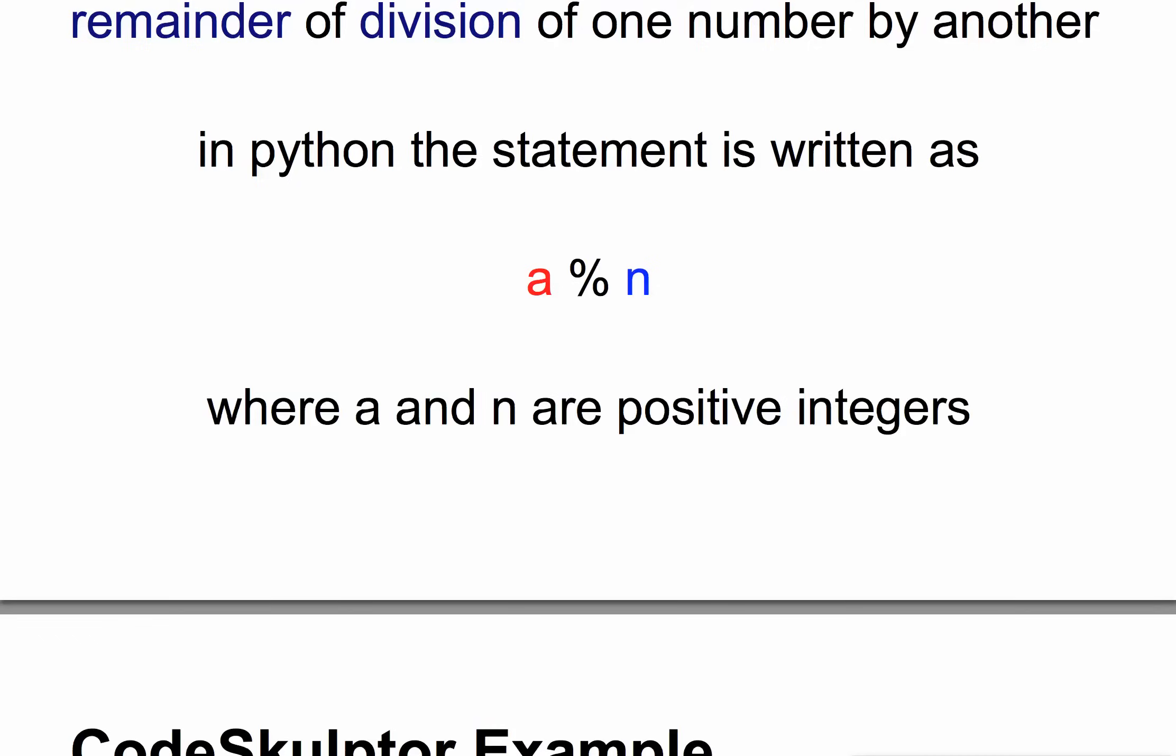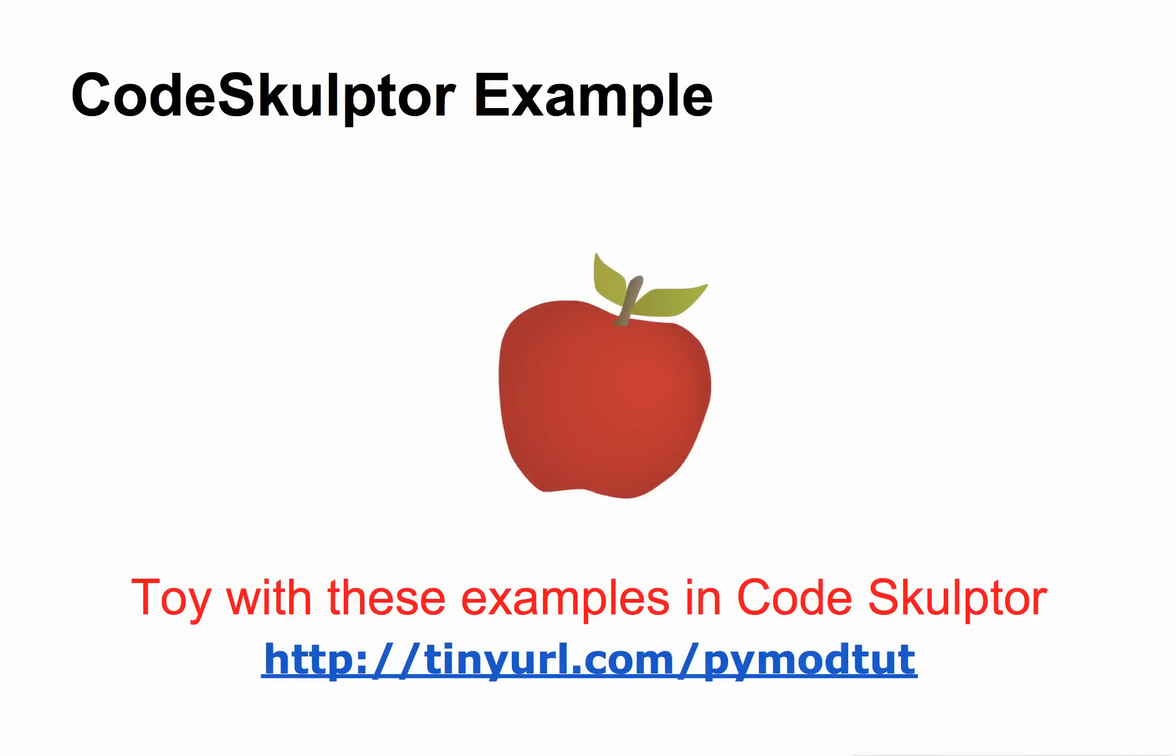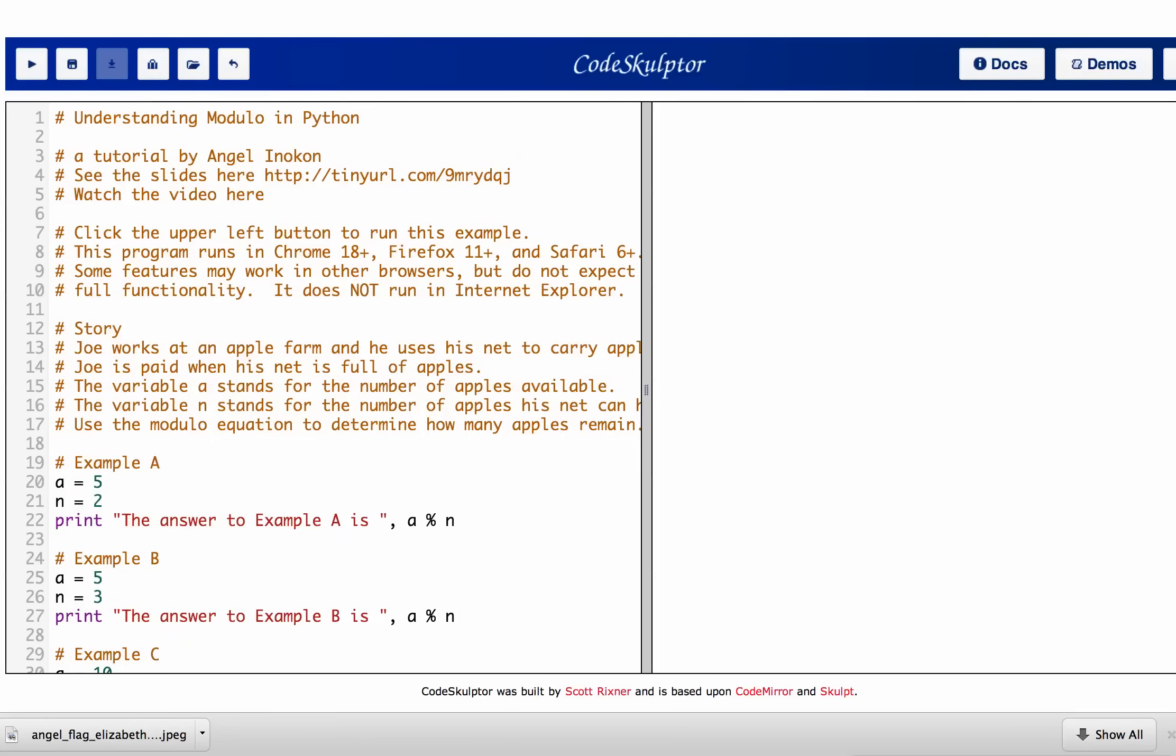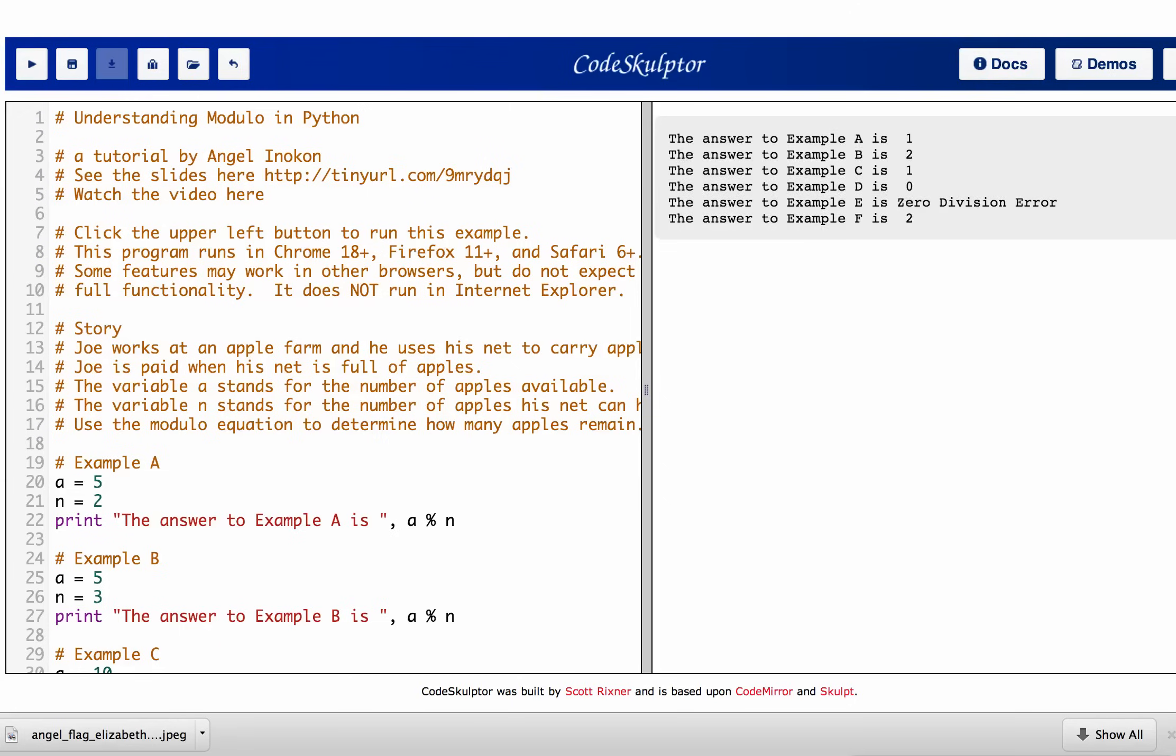And so what I did with this is I threw together some examples in CodeSculptor. CodeSculptor is a free online tool and you can find the example code for this exercise by clicking this link, tinyurl.com, pi mod toot, and I have it open in another browser. And essentially it takes all the examples in this demo and you can run it and see the results here.